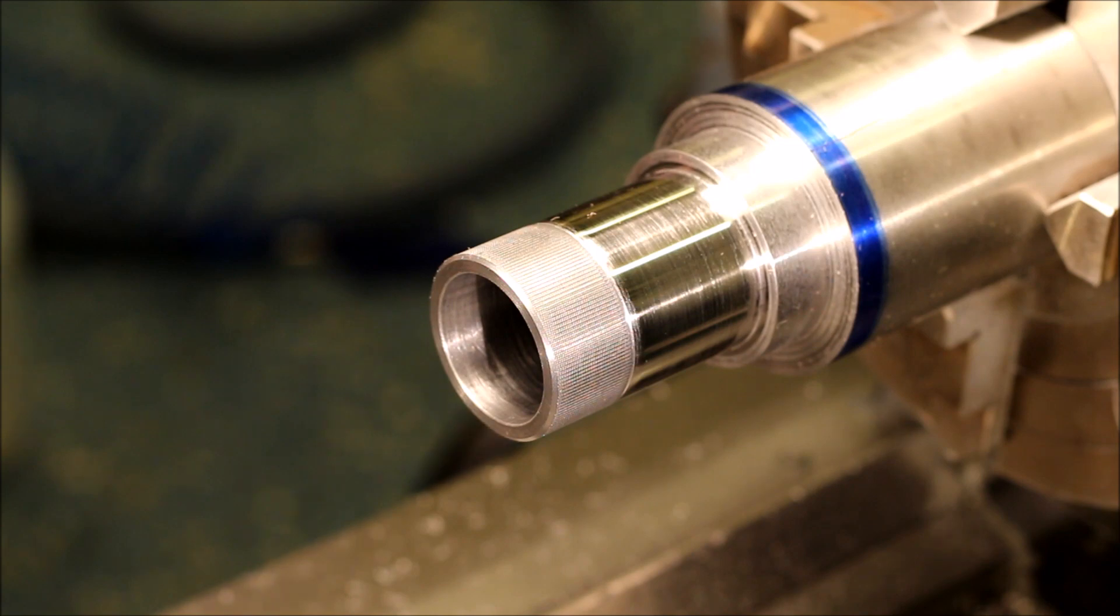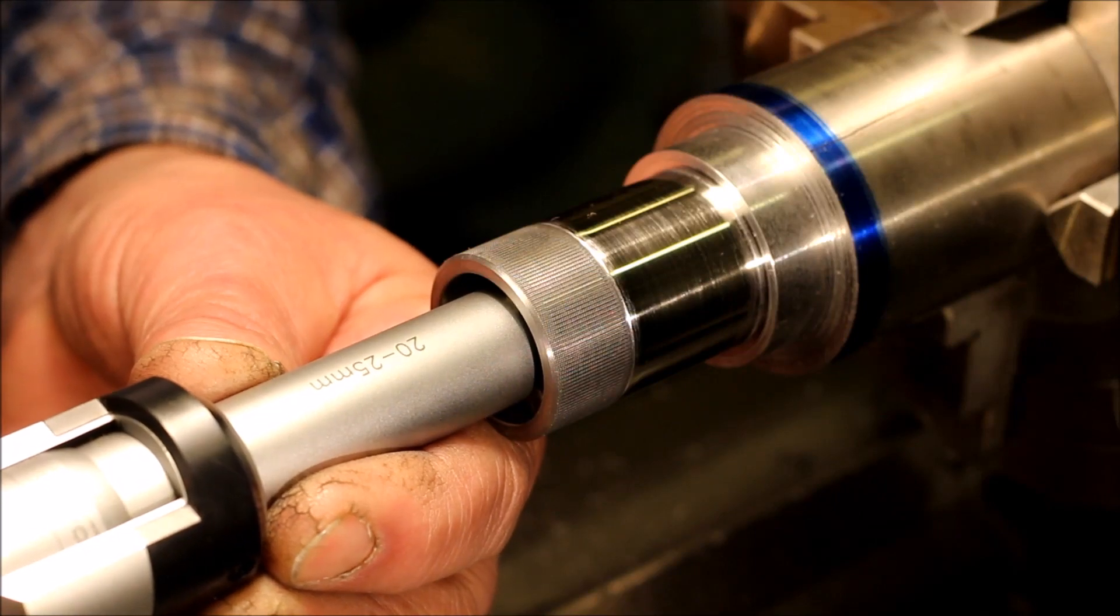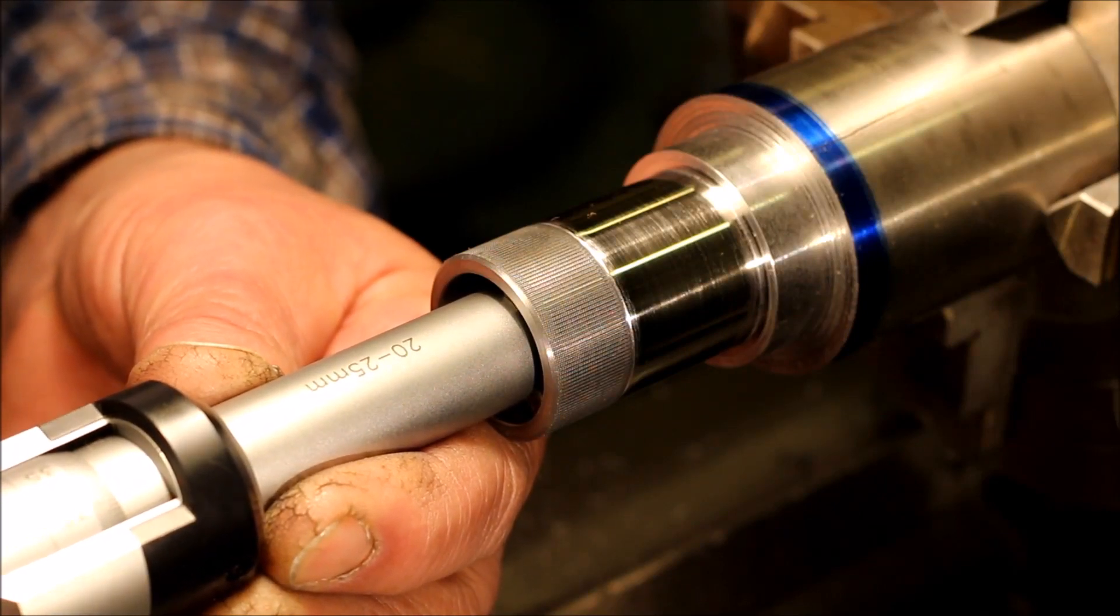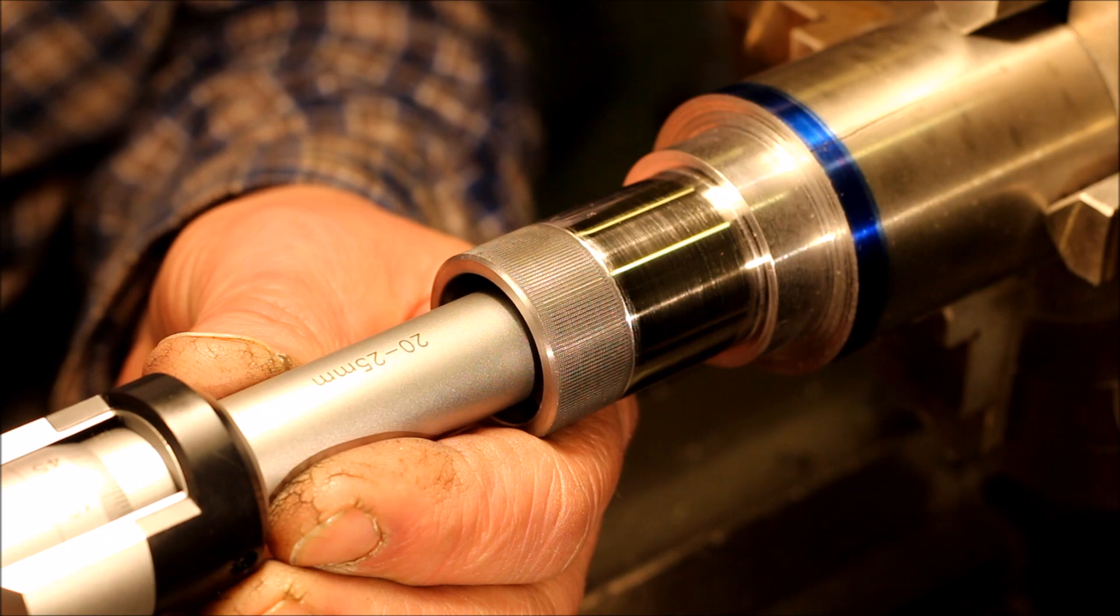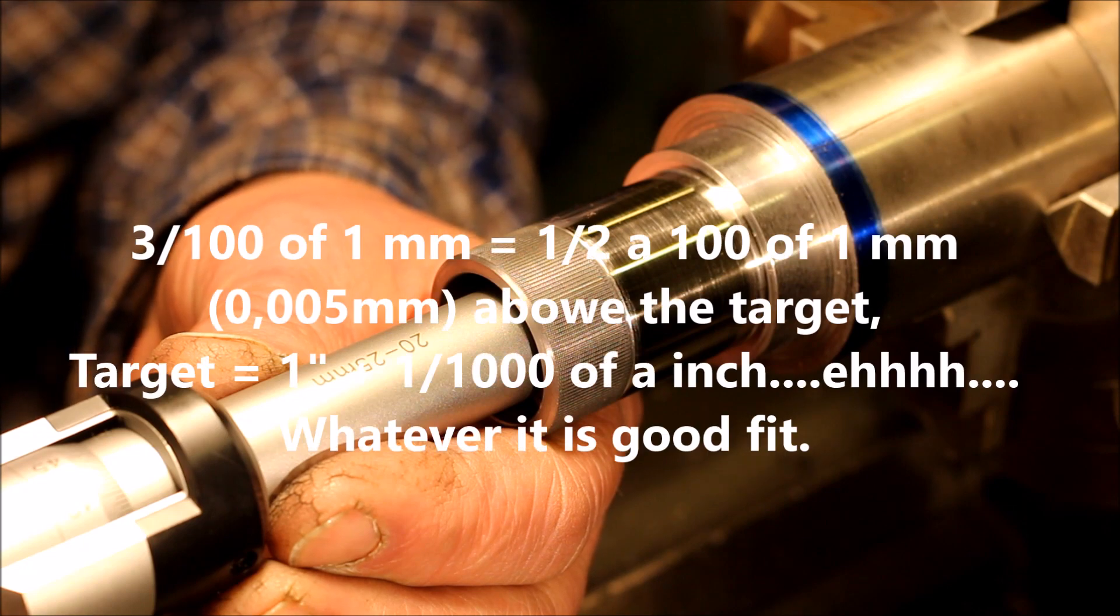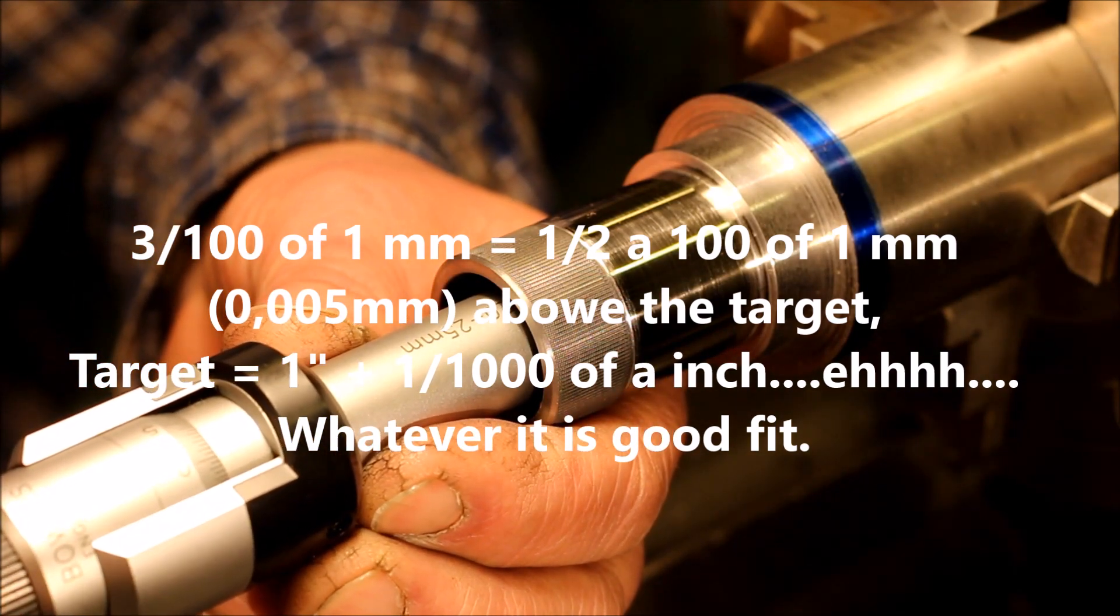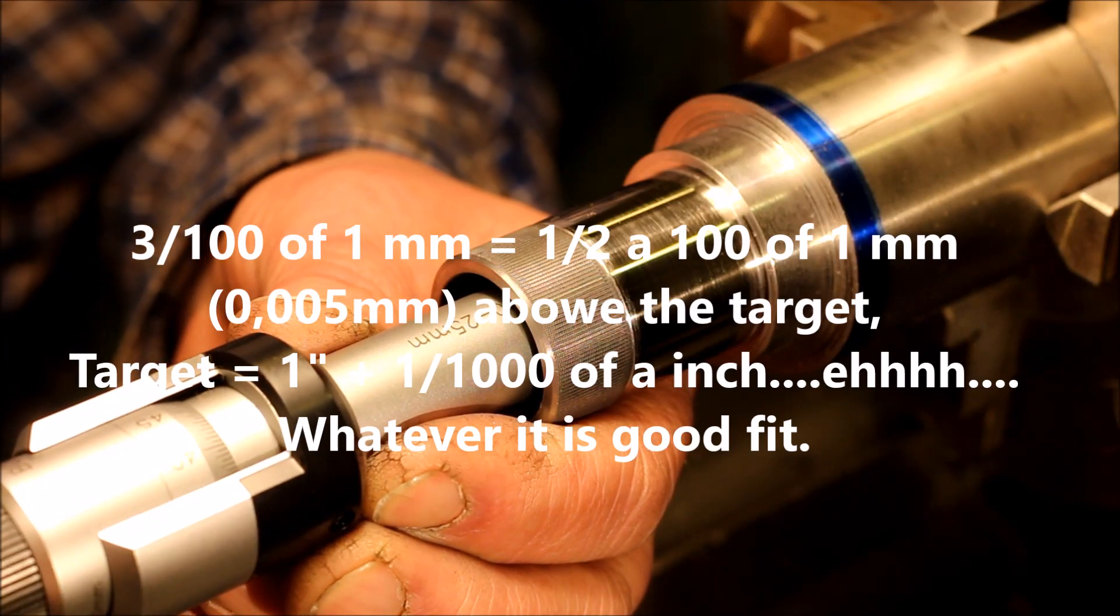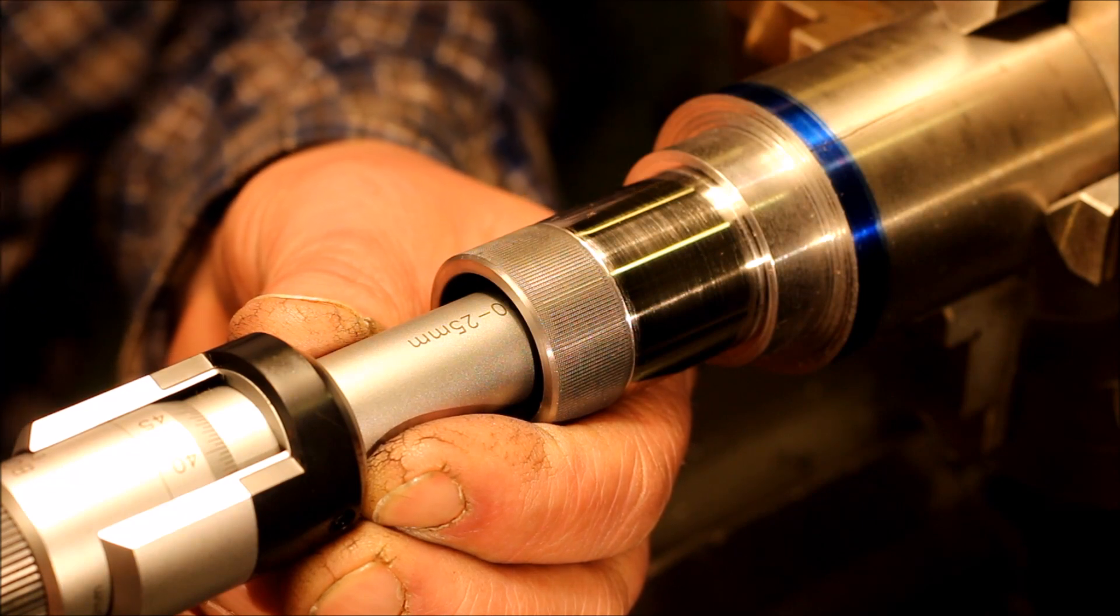Now let's measure the hole and see how close we are to 25.4mm - that is the same as one inch. And there it is: 25.43mm. So it is 0.03mm above one inch. Inside it is 2.5 hundredths above.